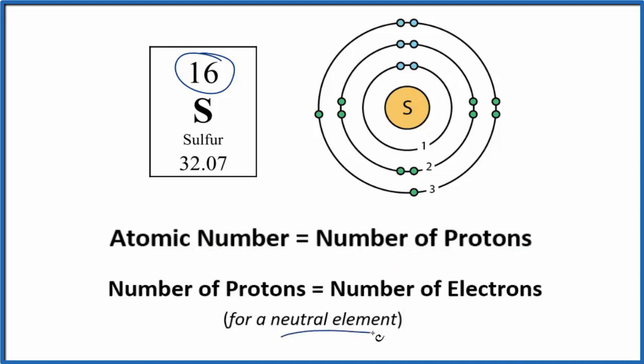Sulfur is also a neutral element. All of the elements on the periodic table are listed as neutral. Since it's neutral, the number of protons equals the number of electrons. So we have 16 protons in the nucleus, and then we're going to have 16 electrons in these energy levels here around the nucleus of the sulfur atom.